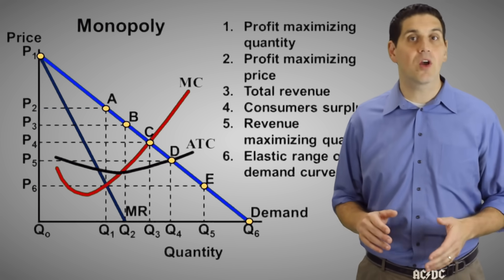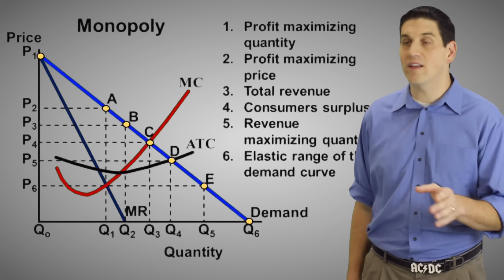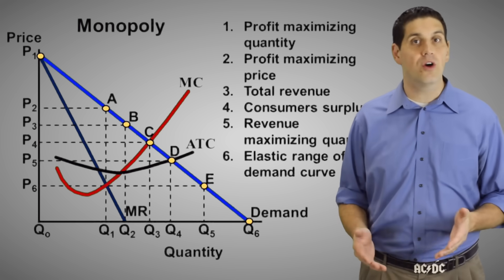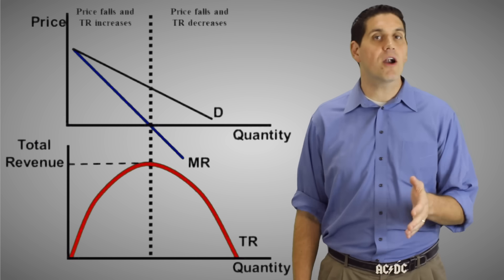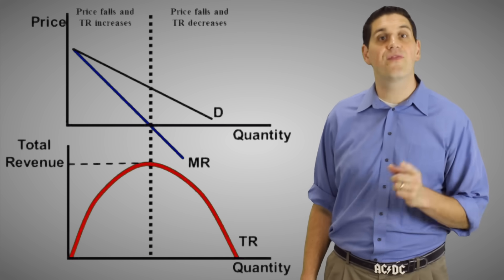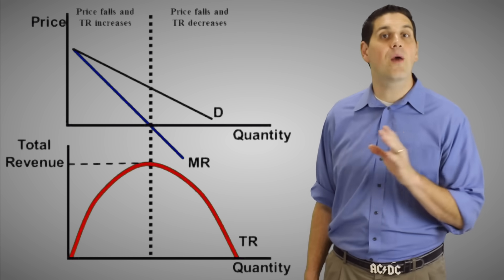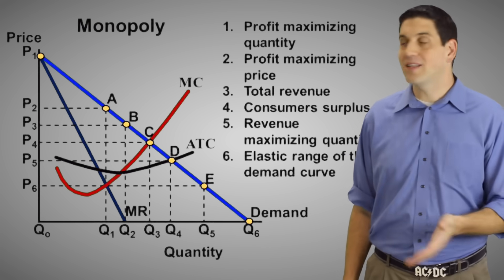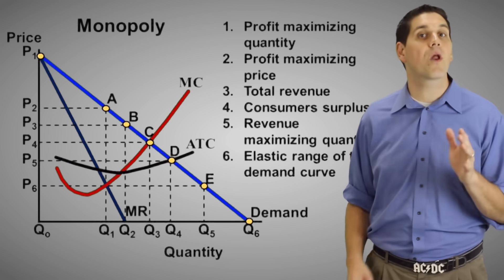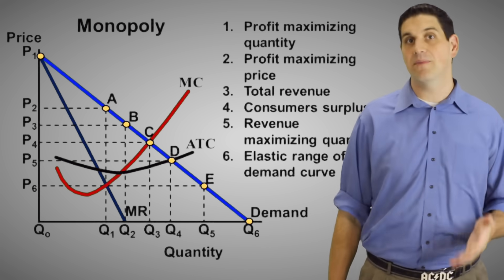Now the revenue maximizing quantity is not Q1. Remember, Q1 is the profit maximizing quantity. If you want to maximize your total revenue, you're going to produce at Q2. This is a spot where marginal revenue hits zero. When your marginal revenue is going down, but it's still positive, that means your total revenue is going up. And when marginal revenue hits zero, your total revenue will be at a max. Now why doesn't a firm decide to produce to maximize total revenue at Q2? Well, because they want to maximize profit where MR equals MC.